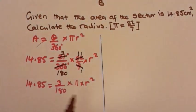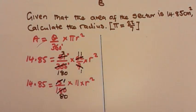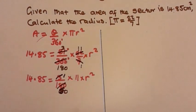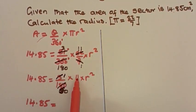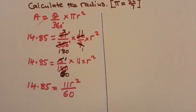We can simplify further: 3 goes into 3 once and 3 goes into 180 sixty times. So we are remaining with 14.85 is equal to 1 over 60, times 11 r squared, which gives us 14.85 is equal to 11 r squared divided by 60.